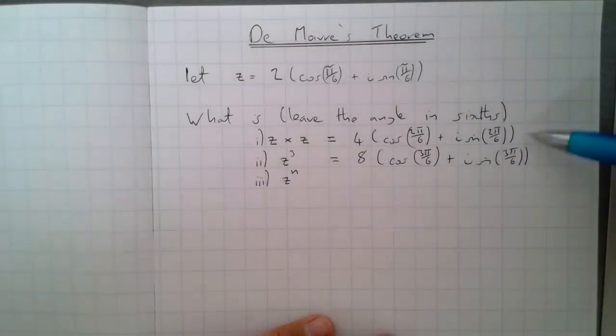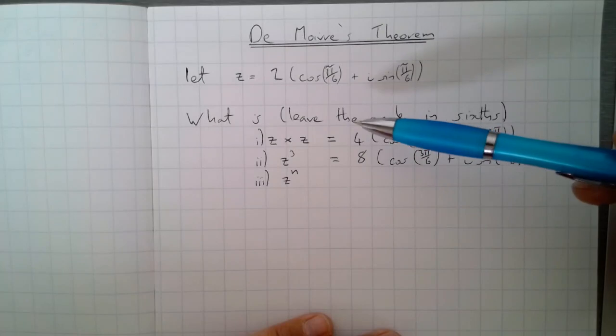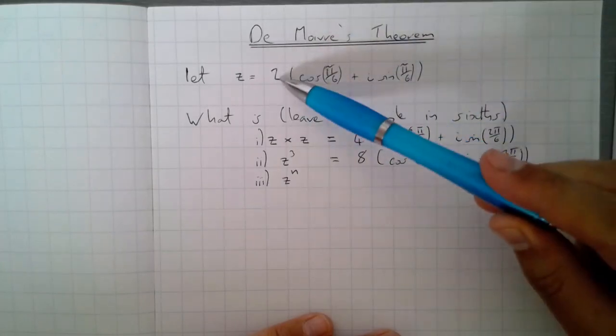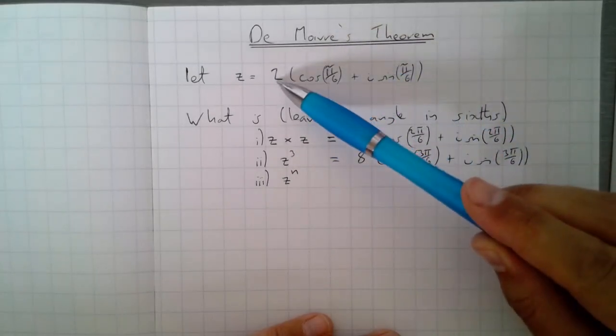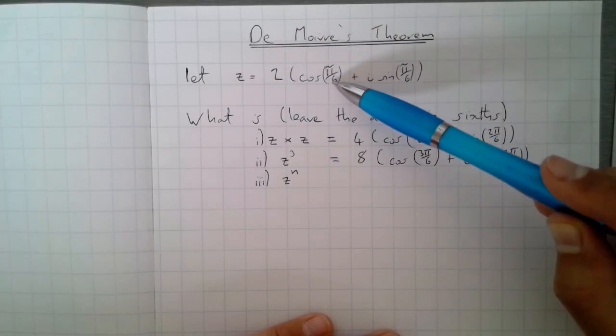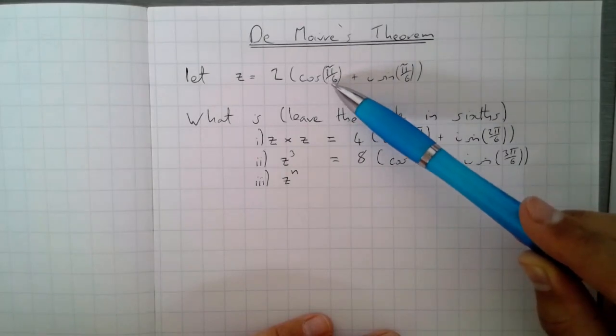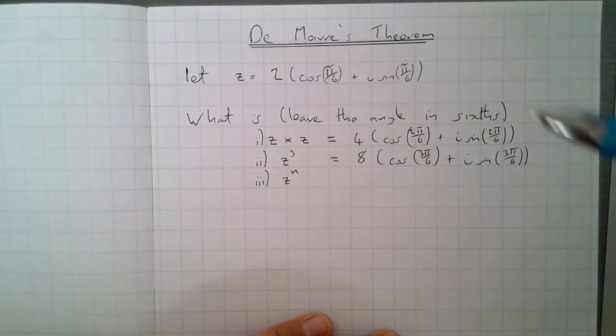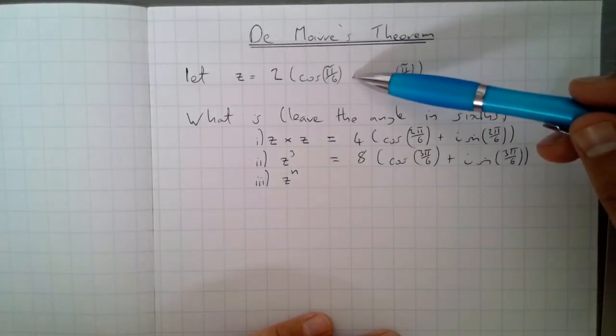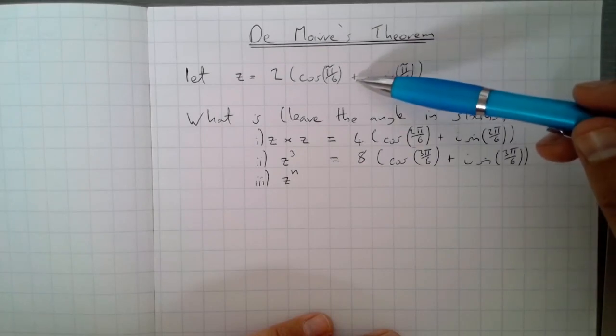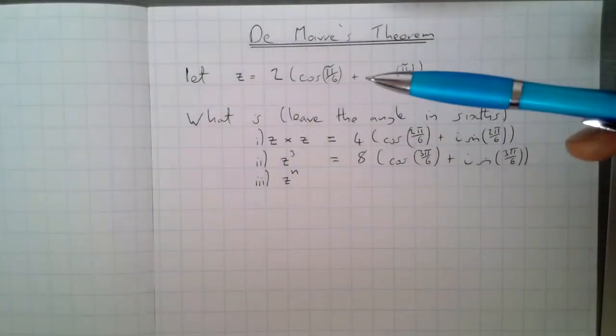Okay, so hopefully you managed to get these two absolutely fine. Remember when we're timesing complex numbers together in modulus argument form, what we do is we times the moduli together and we add the arguments. So I've times 2 by itself to get 4, and I've add the argument to itself to get 2π over 6. Remember that this plus sign here needs to be here, and if this is a minus here you would have to adapt this to make it a plus sign.